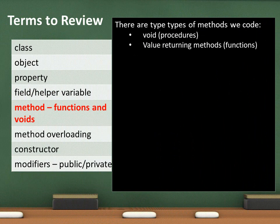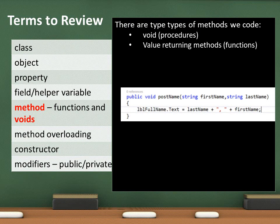It's also very important to understand the use of methods. We have two different types: value-returning methods and void methods. Void methods are called procedures; value-returning methods are typically called functions. Here's an example of a void method called PostName — I'm passing in two arguments, first name and last name. It returns absolutely no value; it's a do-it method. You find void methods very commonly as repetitive code. If you've got a chunk of code, maybe 10 lines, that you repeat over and over, put it in a void method and call that void method whenever you need it — that way you have one place to go if you need to make a change.